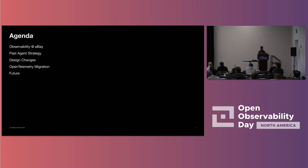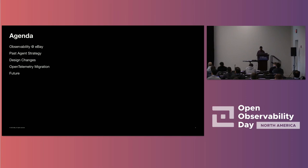We'll talk a little bit about what observability at eBay means, what our architecture is, things that we use, what was the previous strategy that we used, how we evolved it over a period of time, some of the design changes that were associated with it, and then talk about the actual changes involved in the OpenTelemetry migration and what we are going to do next.